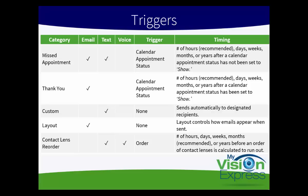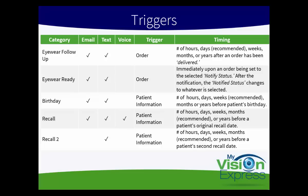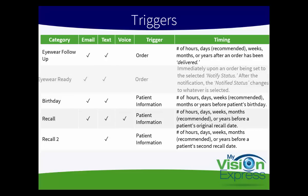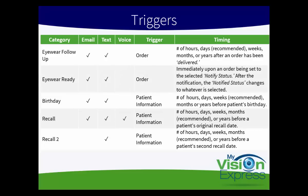The eyewear follow-up message type can be sent via email or text, triggered by an order, sent days, weeks, or months after an order has been delivered. We recommend a few days or even weeks after delivery. The eyewear ready message type can be sent via email or text — it is triggered by an order and is immediately sent upon an order being set to the selected notify status, typically Inspected. After the notification is sent, the order status changes to Notified. The birthday message type can be sent via email or text, triggered by the patient's information. We recommend sending email types weeks before, and text messages a few days before the patient's birthday.